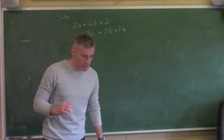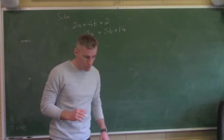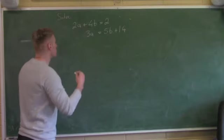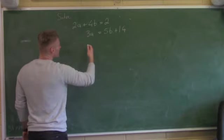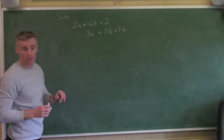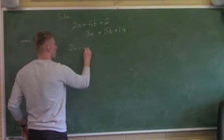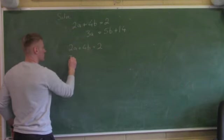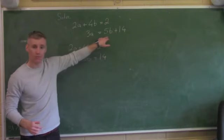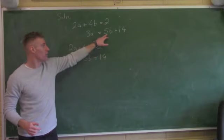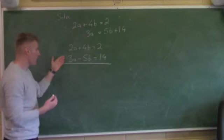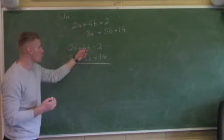This is a simultaneous equation, similar to 2016 paper 1 question 3. The question is: solve the equations below to find the value of A and the value of B. I need to figure out what A and B are. The first line is A plus 4B equals 2, and the second line needs to be rearranged: 3A minus 5B equals 14.